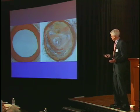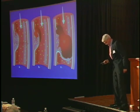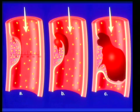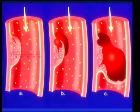How do most heart attacks occur? A, B, and C. If you look at A, the plaques that are most scary — that are never treated by angioplasty — are those that are no less than 10, 20, 30, 40, maybe 50% blocking the artery.